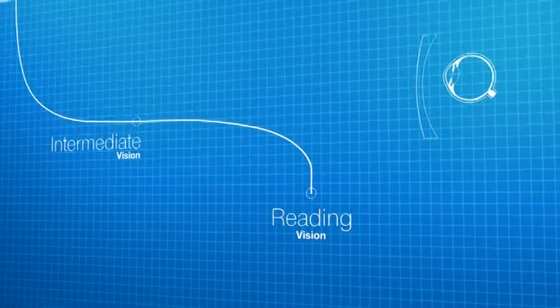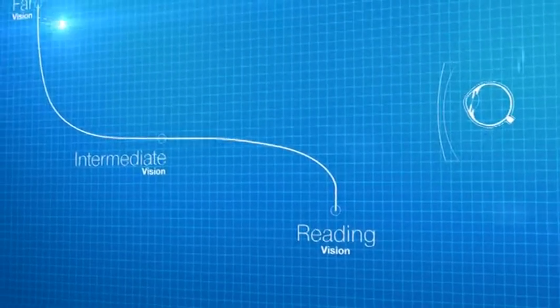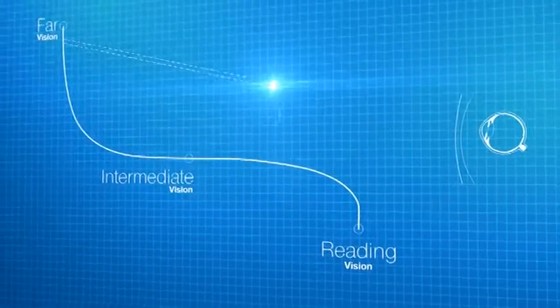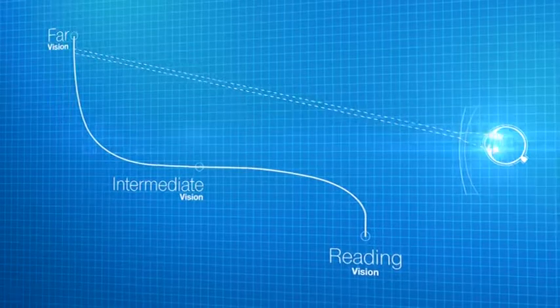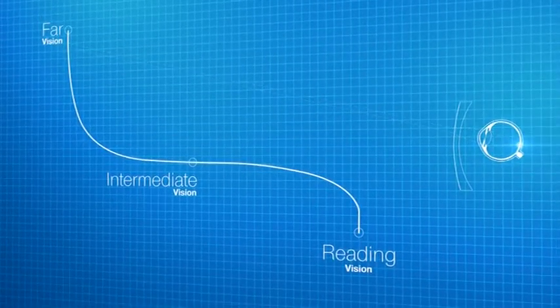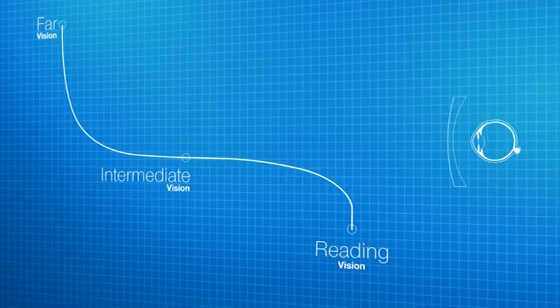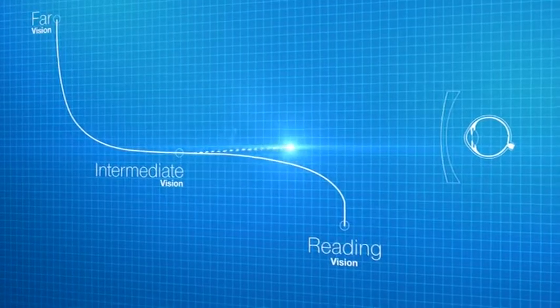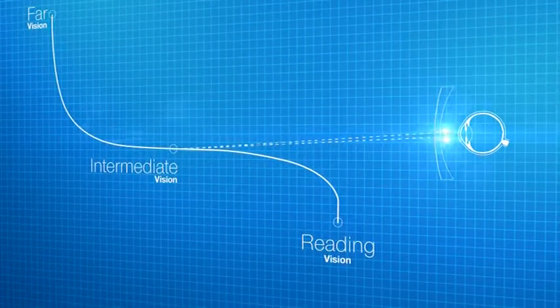In the upper part of the lens, designed for far vision, the passage of rays coming from distant objects is simulated. In addition, the calculation takes into account the vertical movement of the eye and simulates the rays representing the intermediate vision.